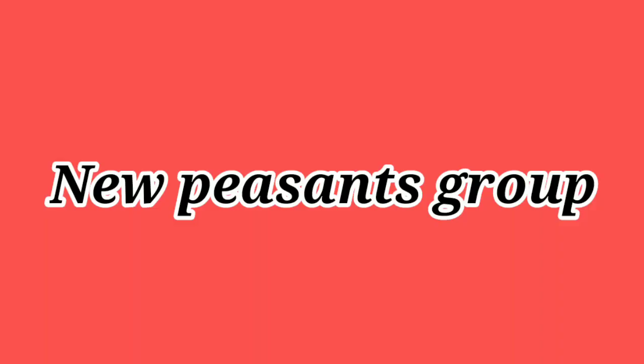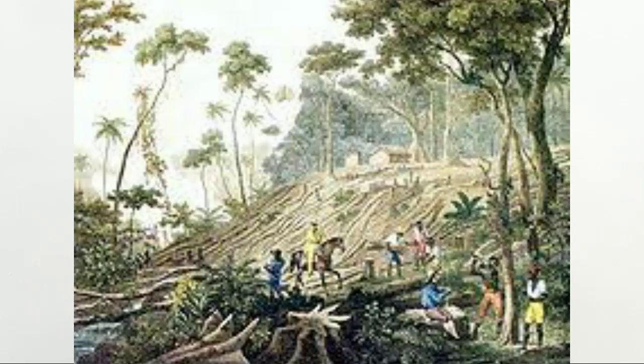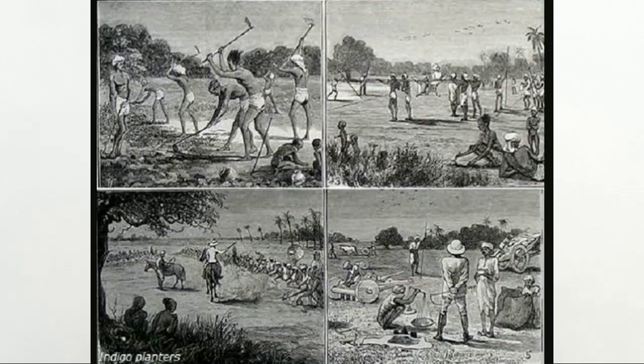Next, we are going to study about new peasant groups. For the purpose of agricultural settlement, forests needed to be cleared. In the medieval period, forests were being cleared for agriculture, and the people living in forests were sent out of their habitat. When they were sent out, the people were forced to migrate from one place to another, which resulted in the formation of new peasant groups.